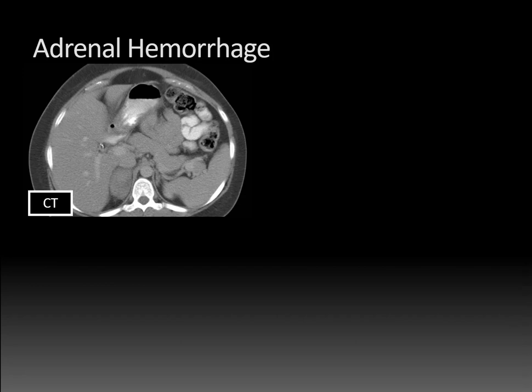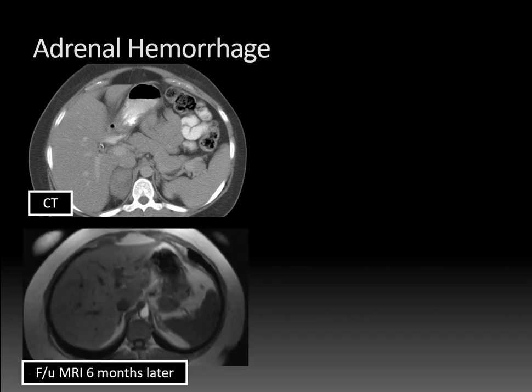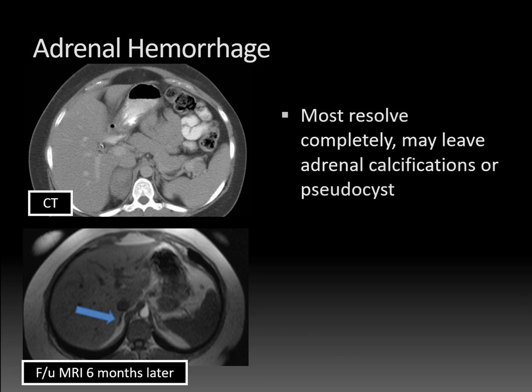What's usually the course for adrenal hemorrhage? This same patient had a follow-up MRI six months later, and you can see that the right adrenal gland posterior to the inferior vena cava looks totally normal now. In most cases, adrenal hemorrhage will resolve completely. It may leave behind adrenal calcifications or a pseudocyst, which I'll talk about in a later lecture.